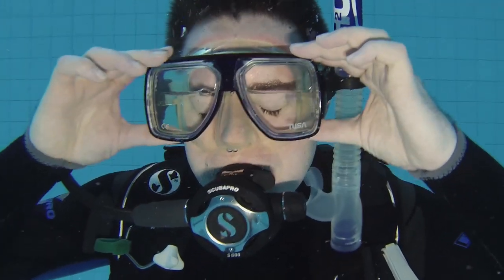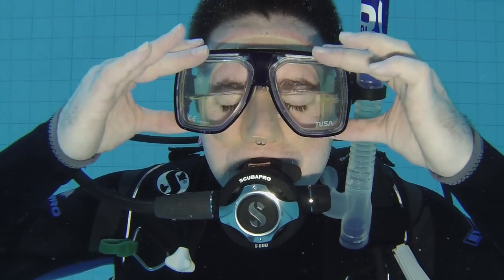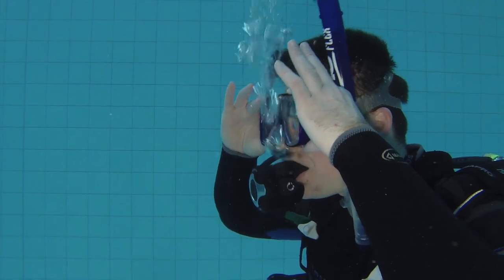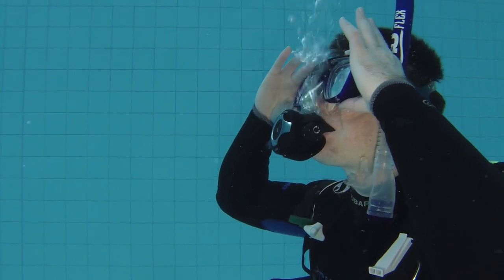That way the water can get out to the lowest point of the mask. I sometimes find the easiest way to clear the mask is to hold onto the top of the mask and just use my thumb to leave the bottom of the mask ever so slightly away from my face, and that helps the water drain out really easily. You can do it with one hand or the other, or both.